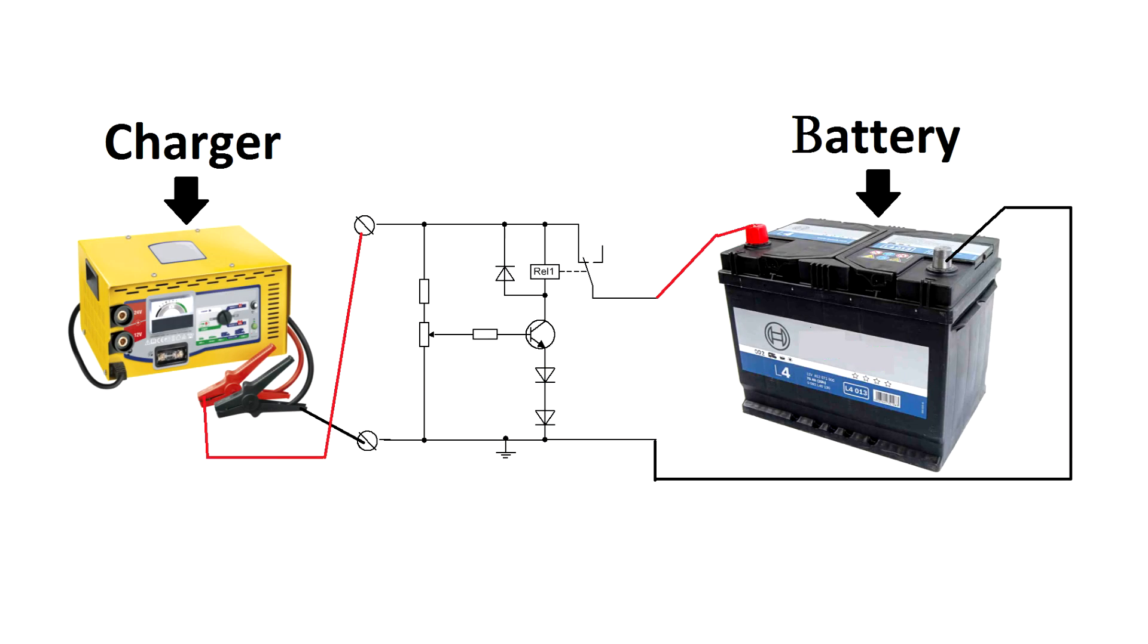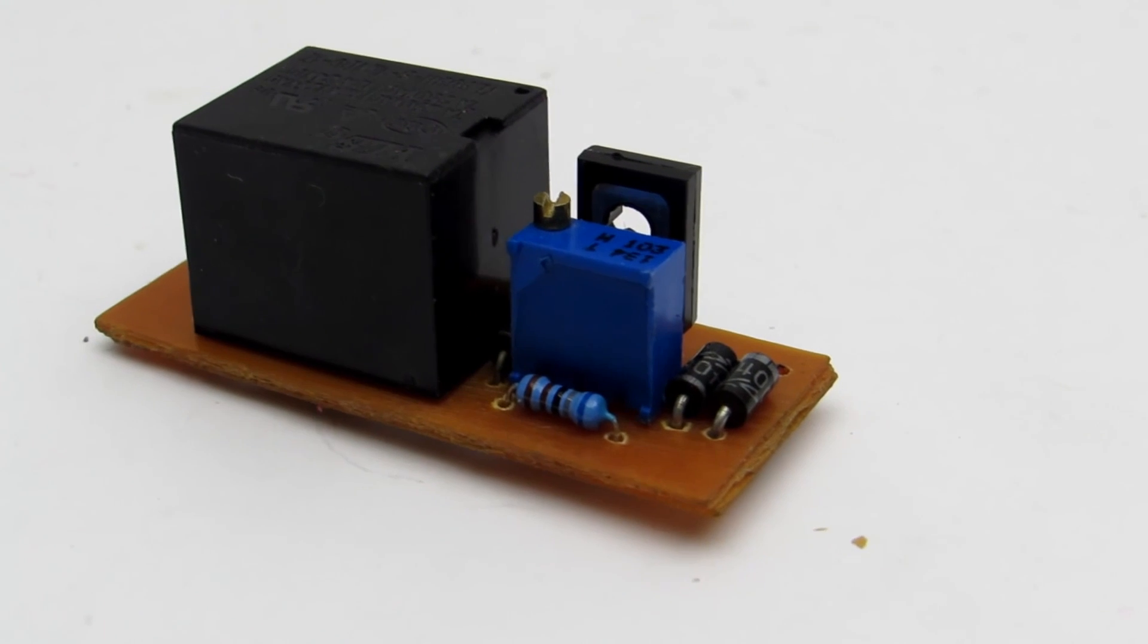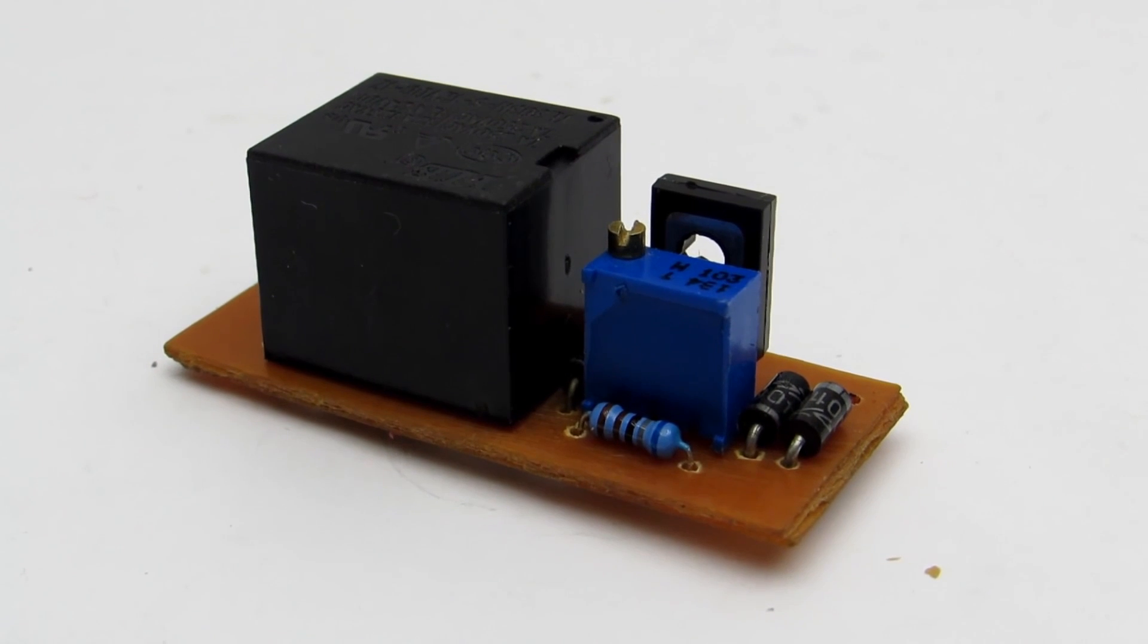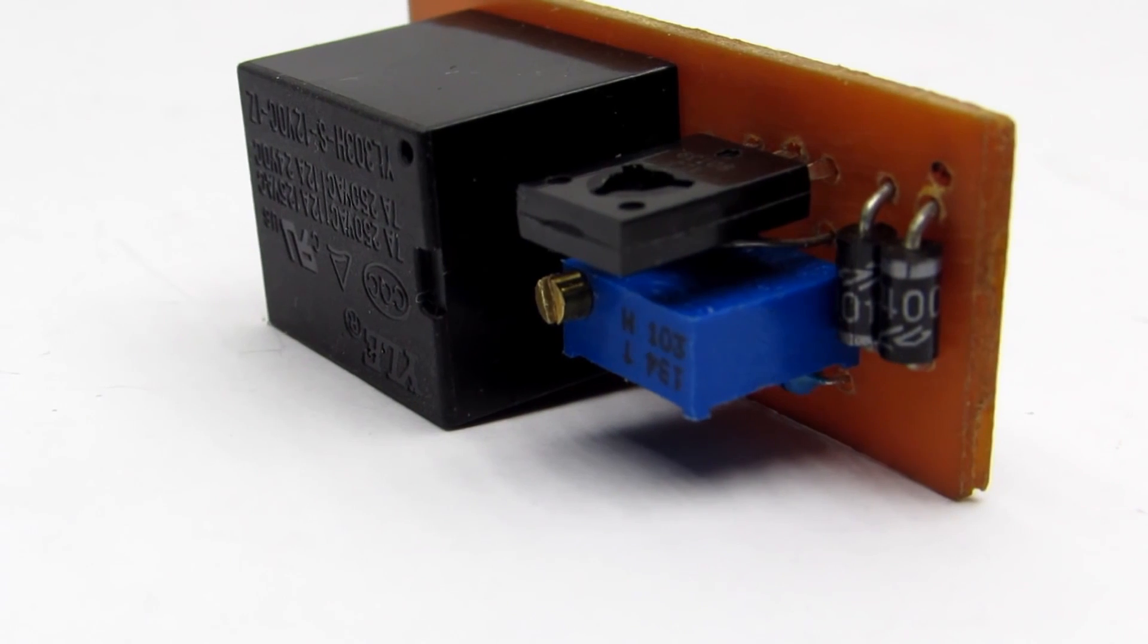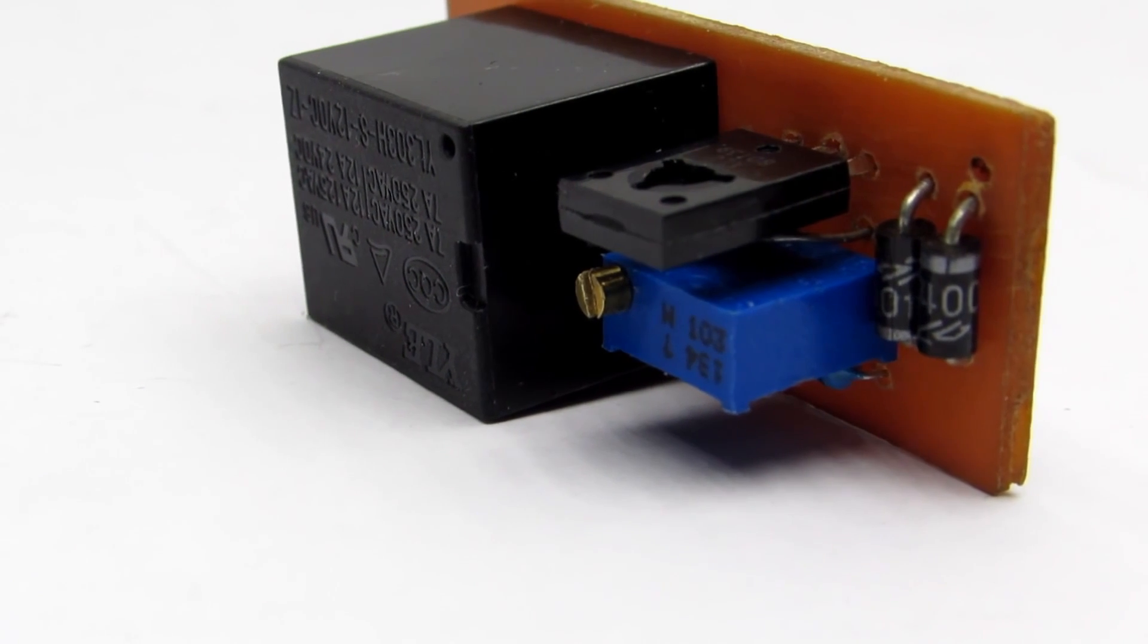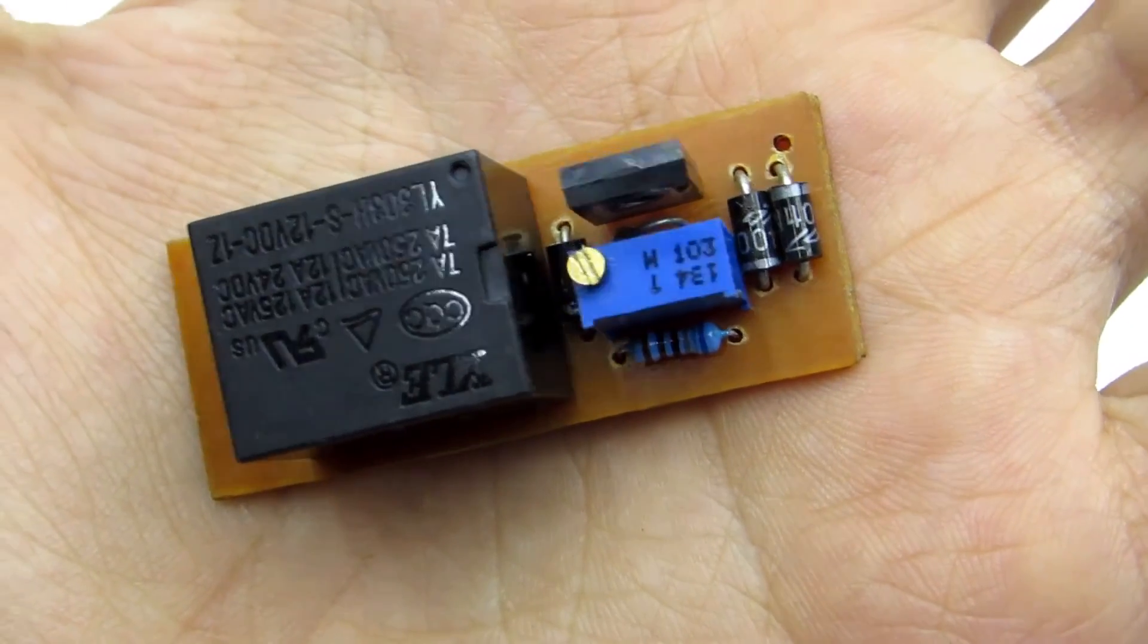By the way, the relay could be connected in another way. In this case the charger isn't disconnected from the network, but simply loses output voltage and the charging process will stop. But the relay must be rated for currents of a half time more than the maximum output current of the charger.